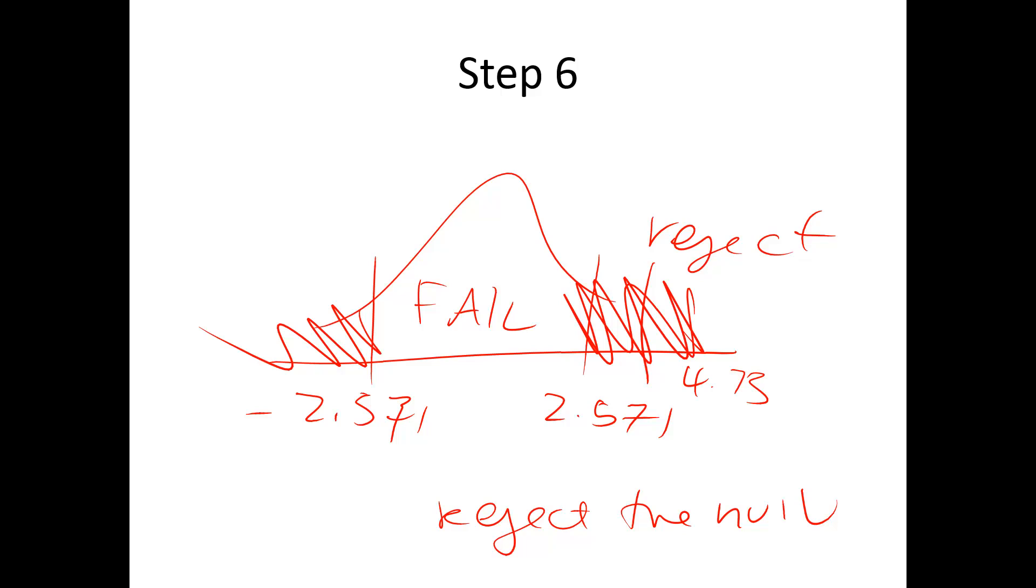So all of that taken together is the six steps for hypothesis testing for determining if the correlation coefficient is significant.